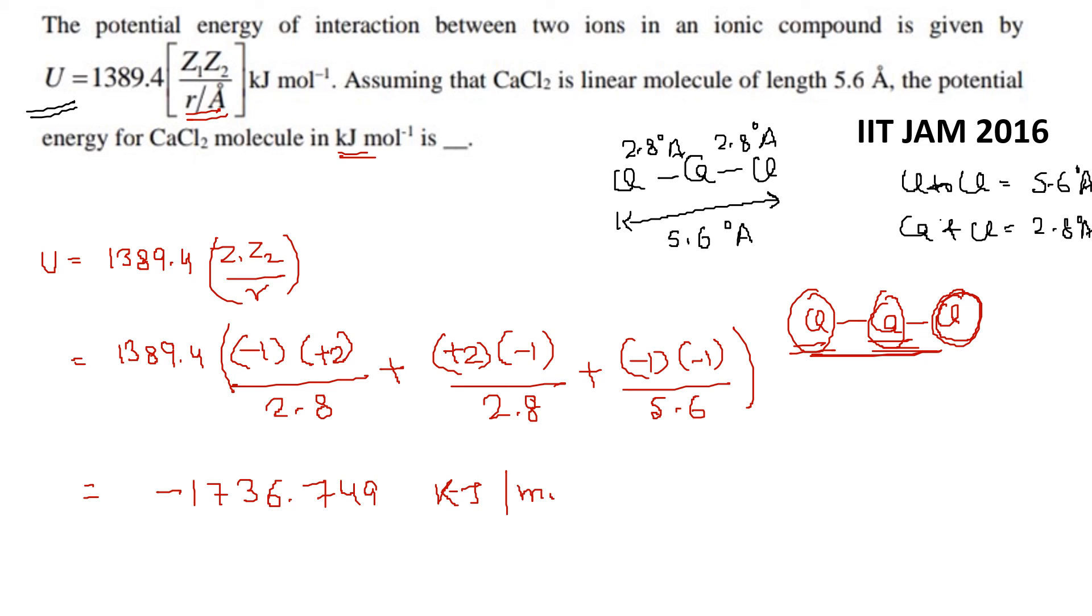So this question is important point - the formula is given for two ions. The potential energy is given for two ions, so here we have three ions: two chloride ions and one calcium ion. So what do we do? We will pair them: one chloride and one calcium, these two, then next is calcium and chloride, and third one is chloride chloride. They will pair Z1 Z2. What is it? Minus 1 minus 1, plus 2 minus 1, minus 1 minus 1.